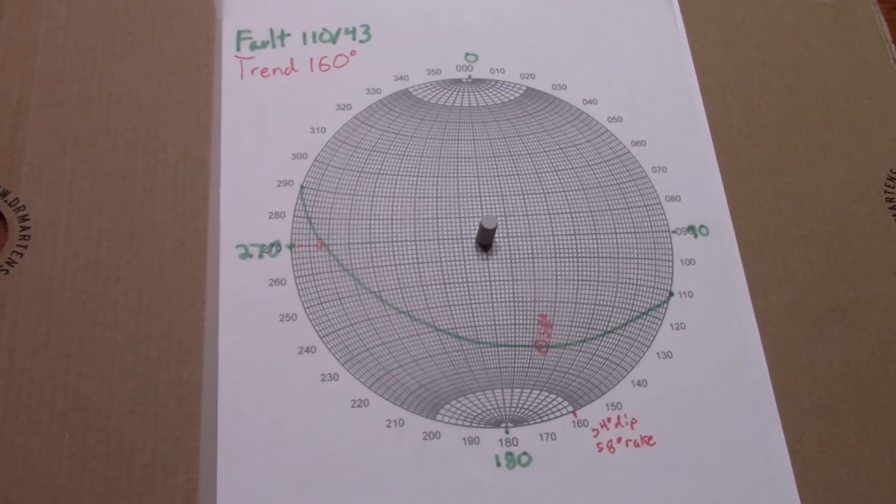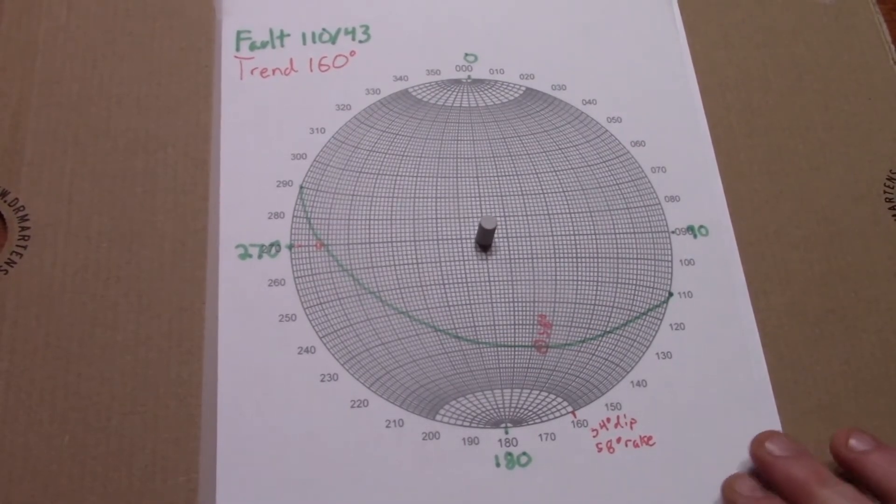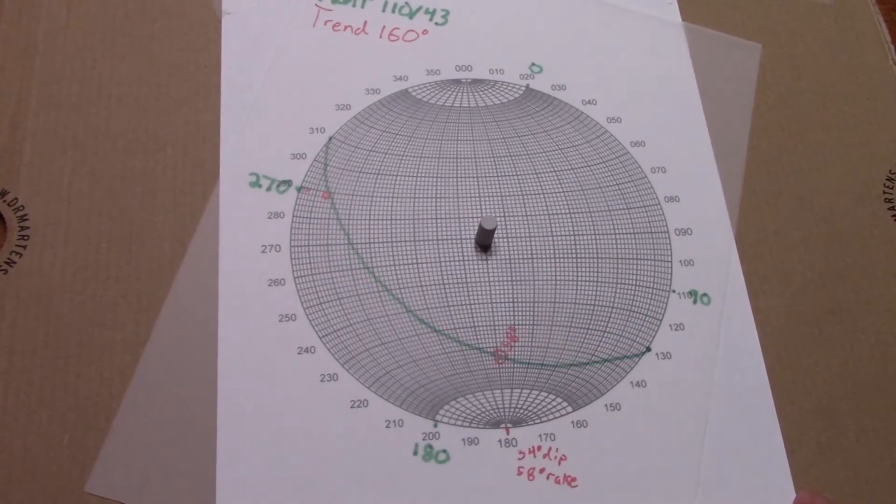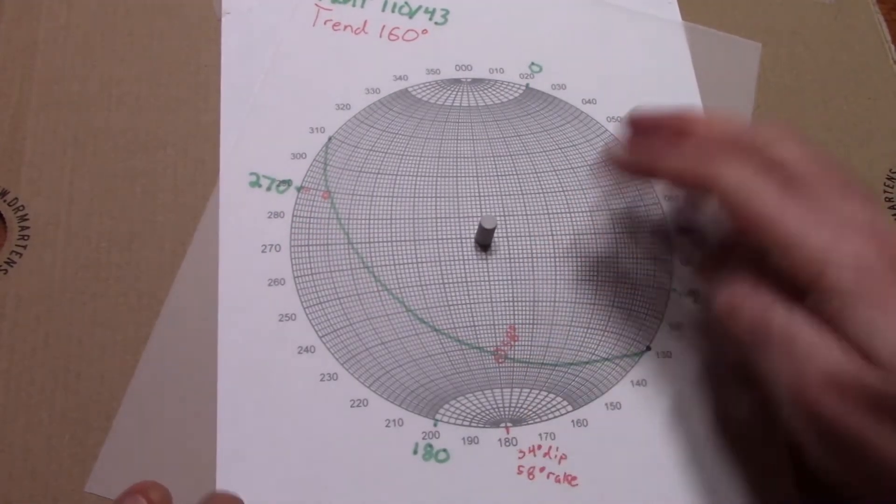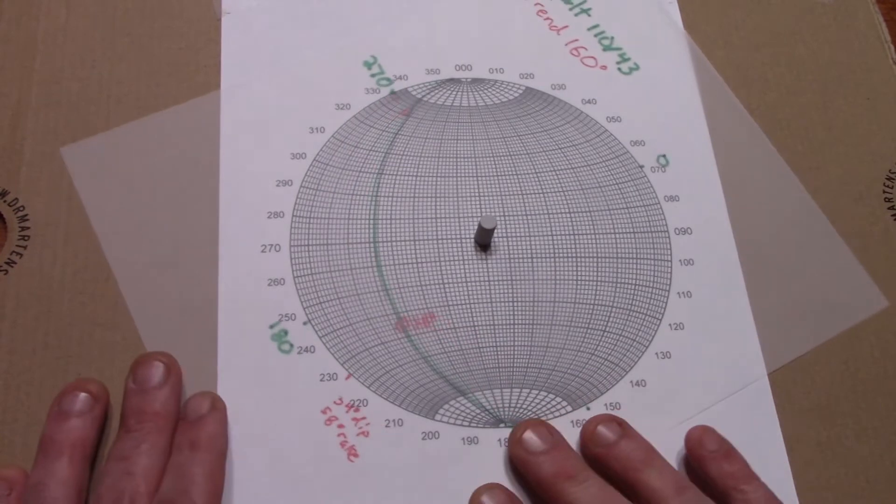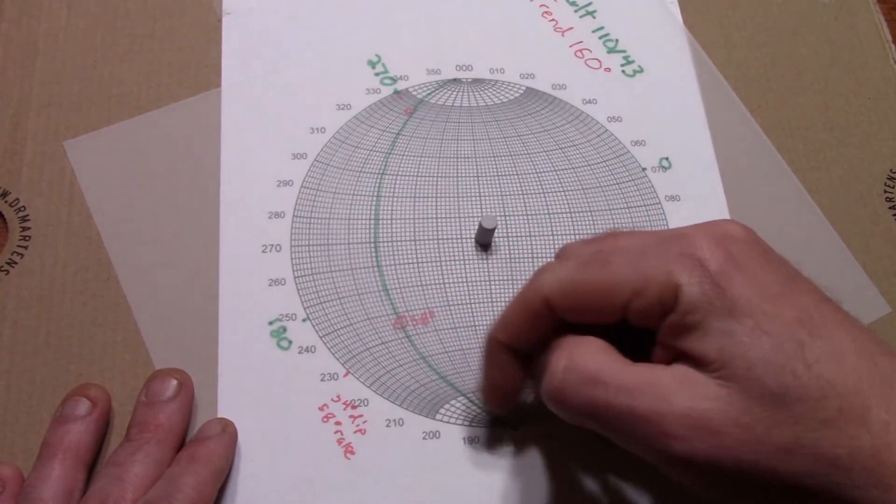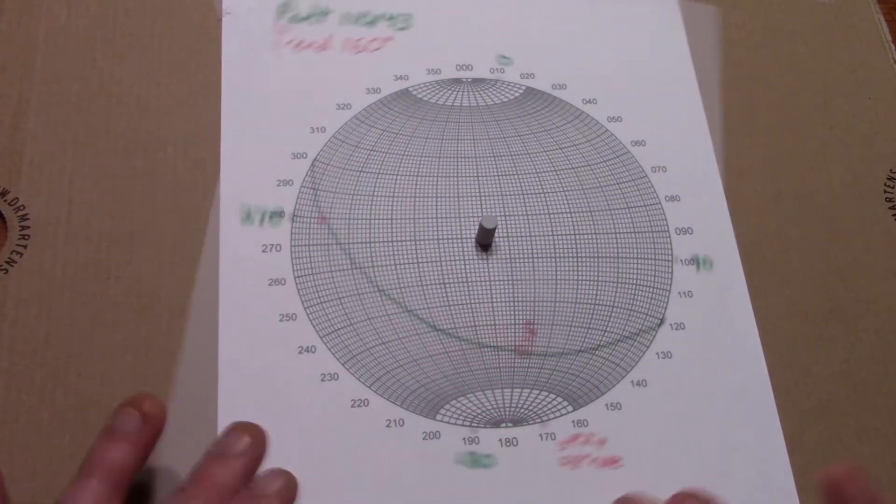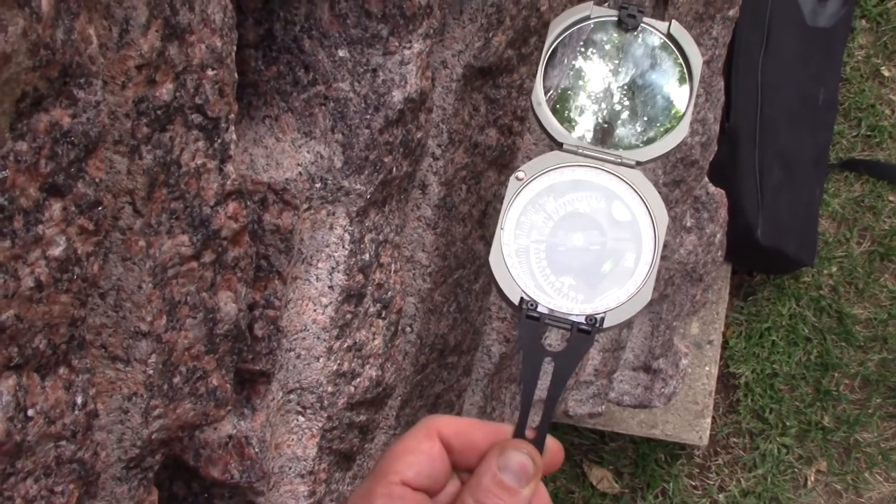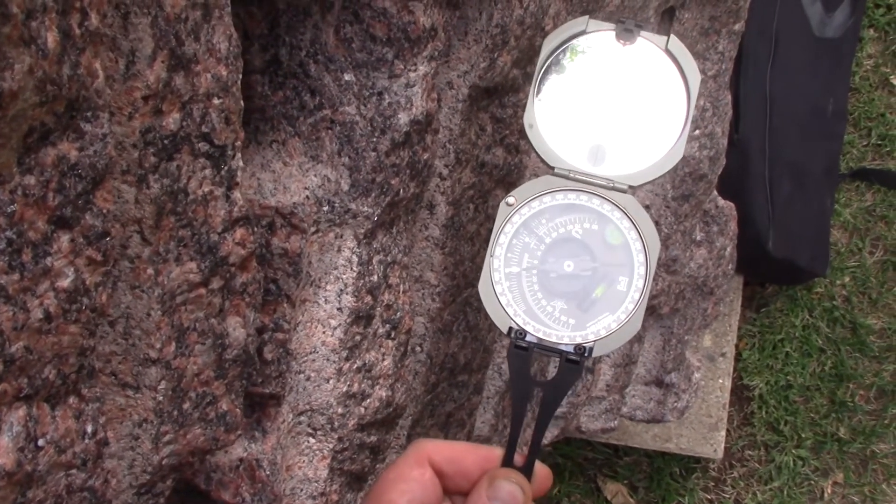Hopefully you can see that if you were given a plane, and then are either given the trend or rake of a lineation, you could figure out the other. All that data can be gleaned from our plot. Give me trend and I can figure out rake, or give me rake and I'll figure out trend. So use one or the other consistently out in the field for lineations. I just find it easier to measure the linear trend.